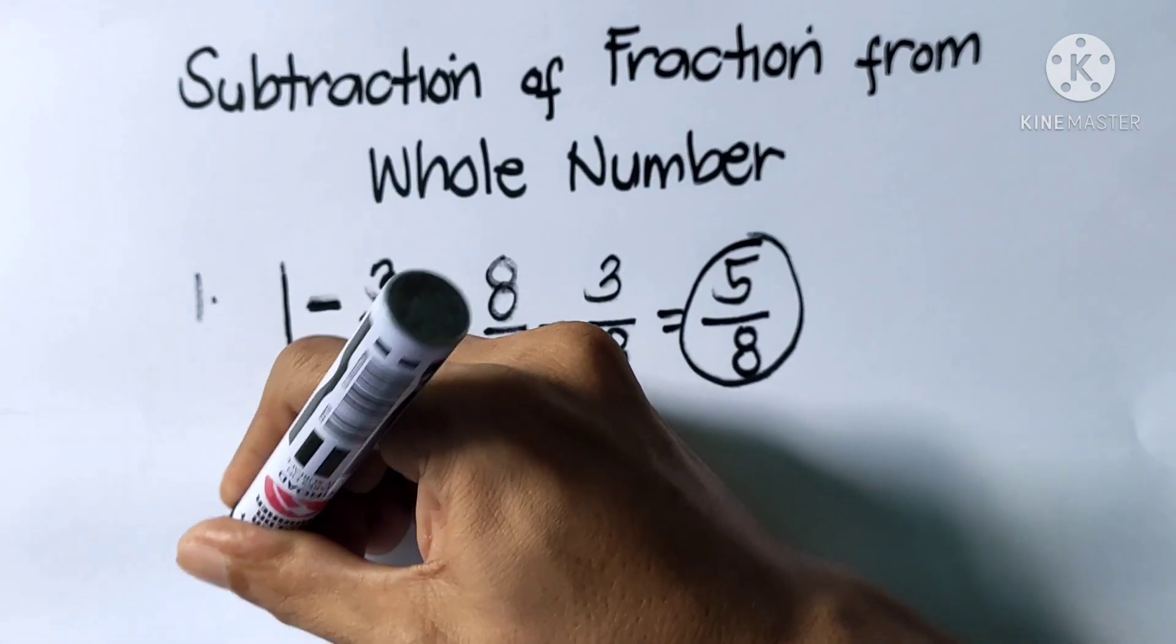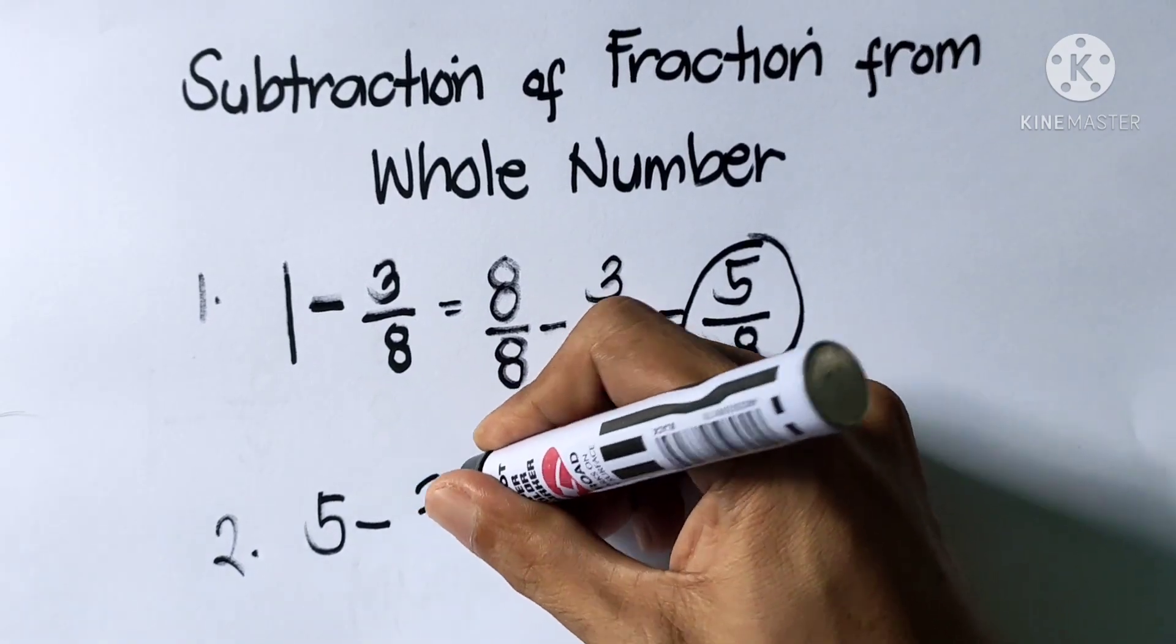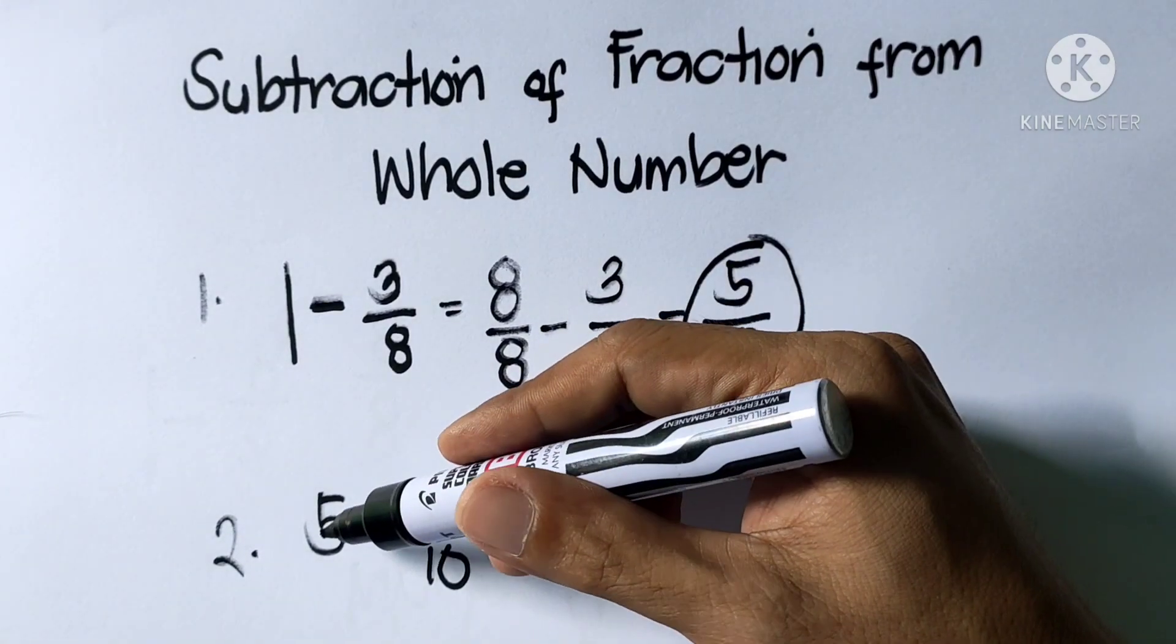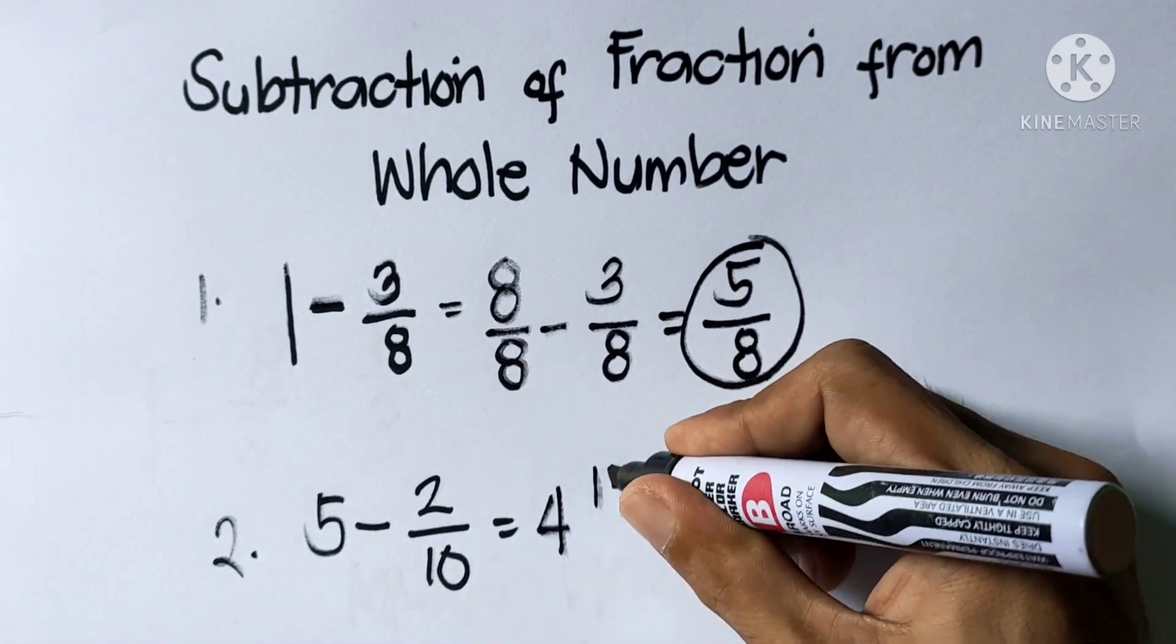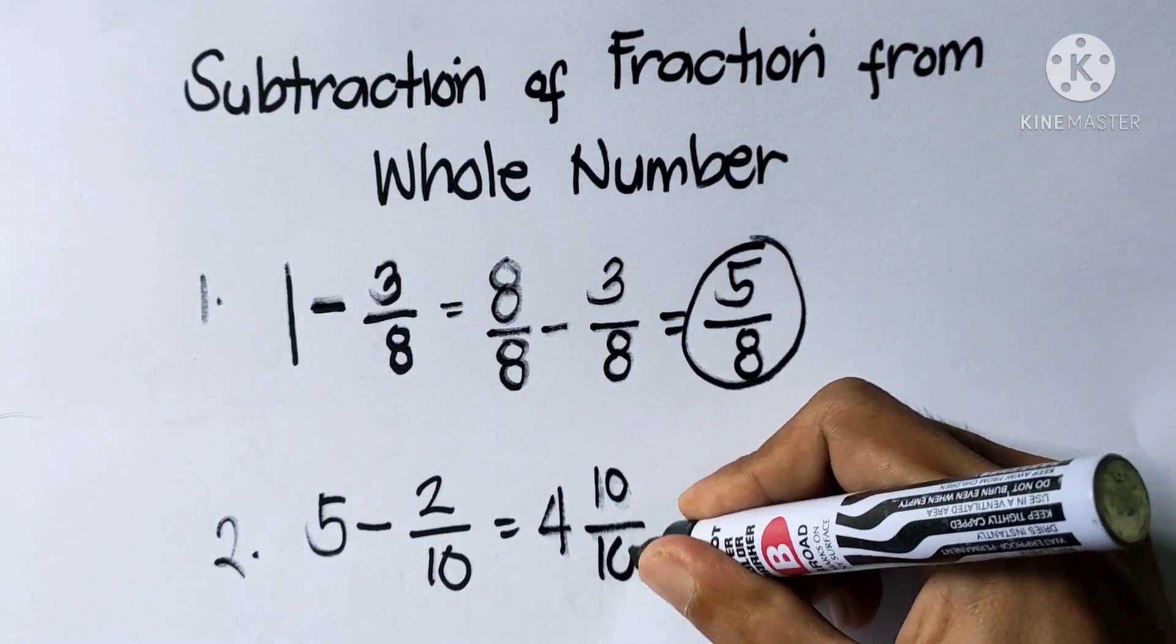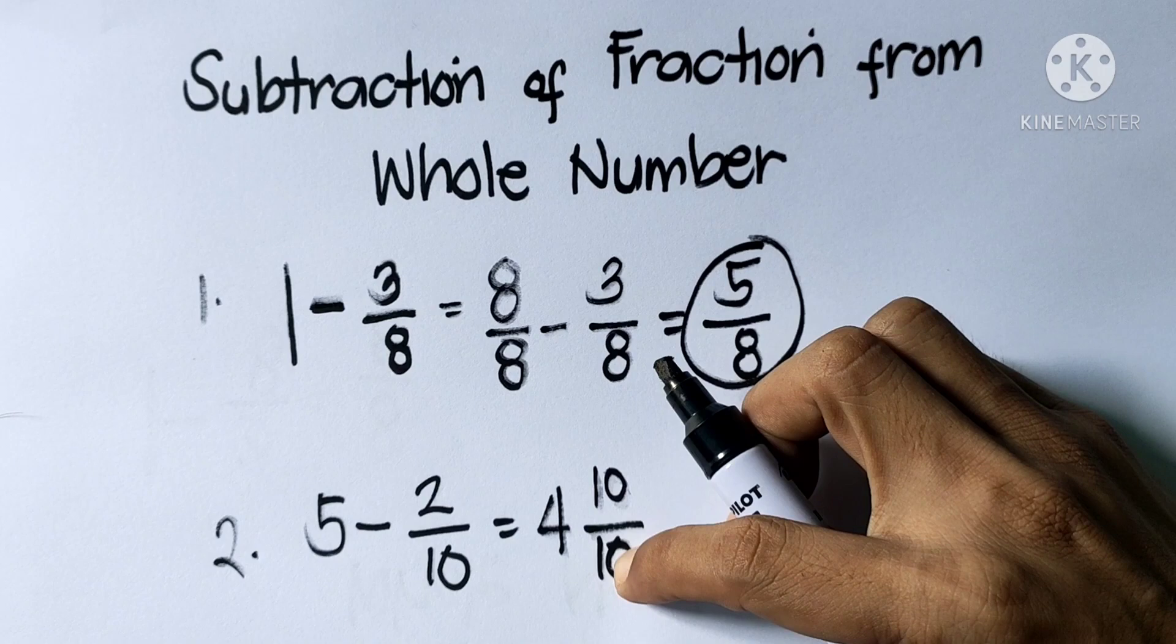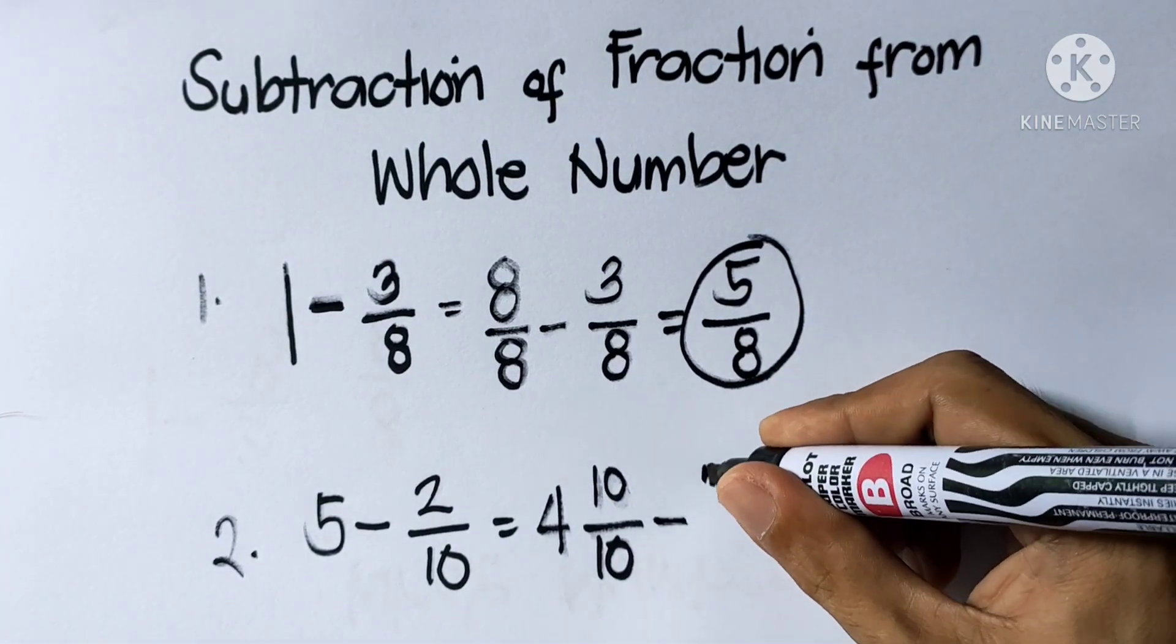Example number 2: 5 minus 2 over 10. We're going to change this whole number into a fraction. 5 minus 1 becomes 4, then the 1 that we subtracted becomes 10 over 10, because our denominator is 10. So it's easy for us to subtract similar fractions. Copy minus 2 over 10.